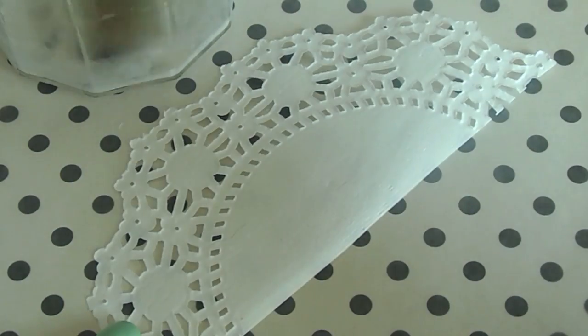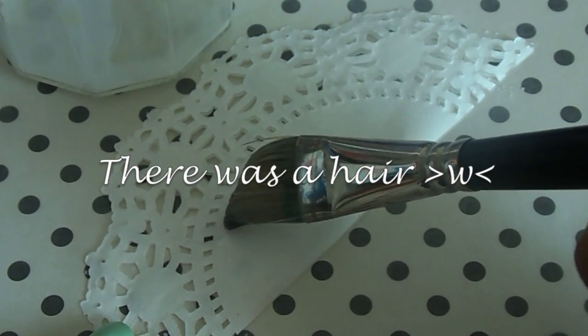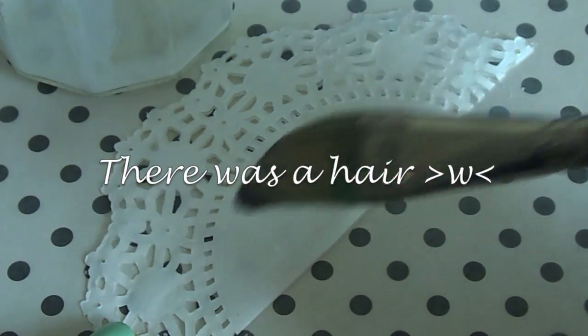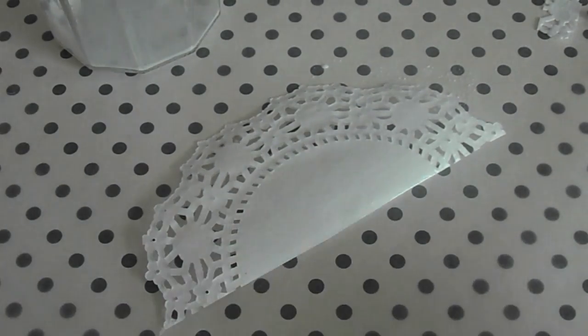And if it's not the right consistency to you, you can just add a little more glue. So just brush this on the back of your doily. And then place this on the front of your jar.